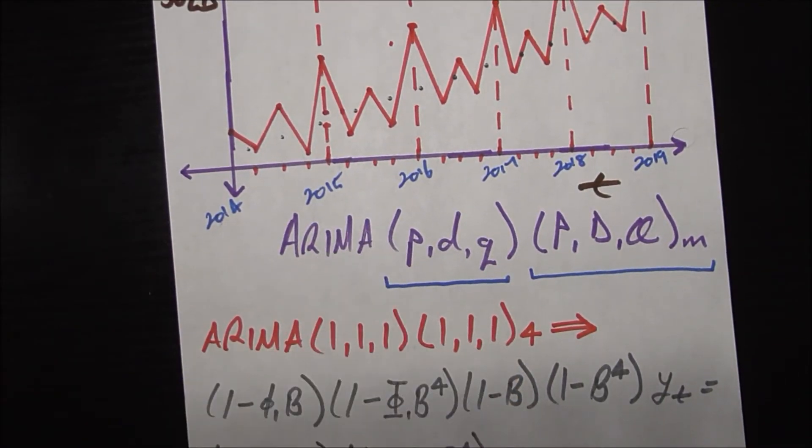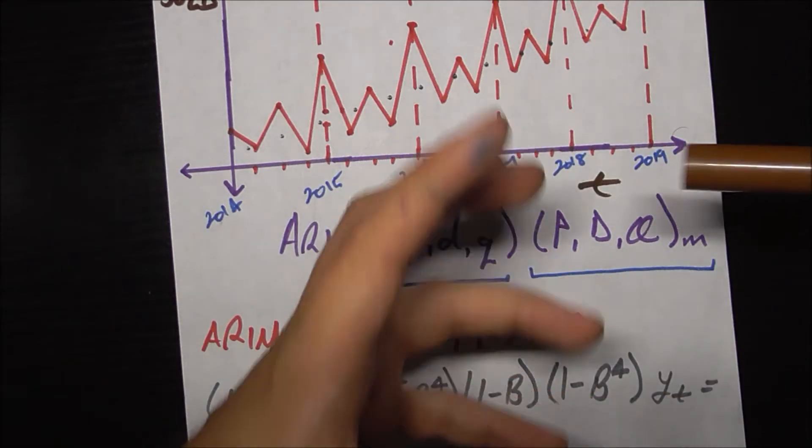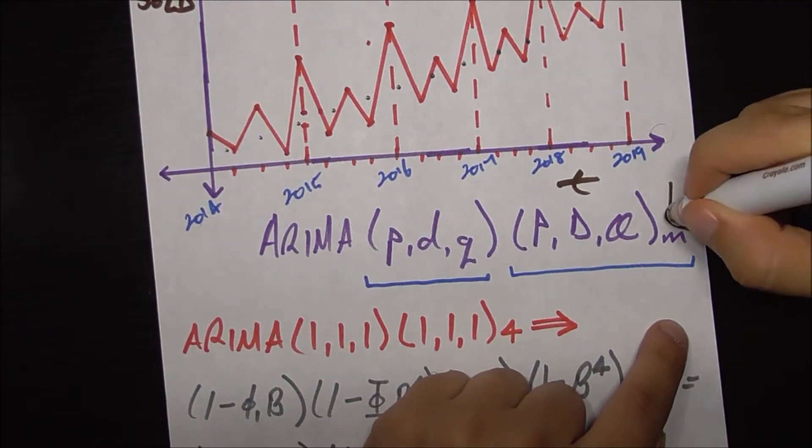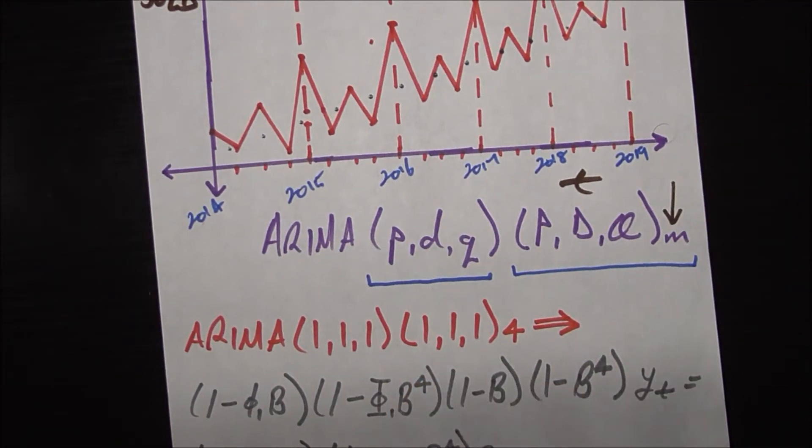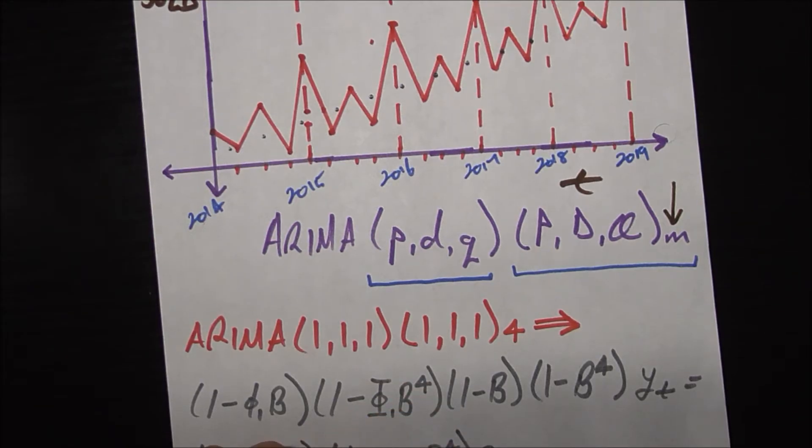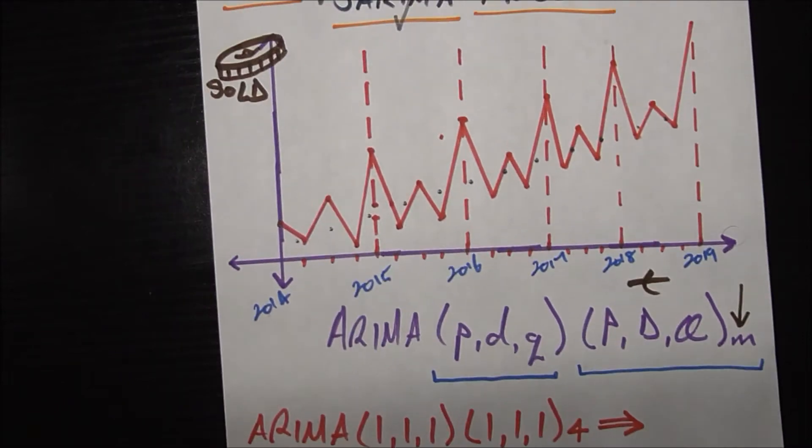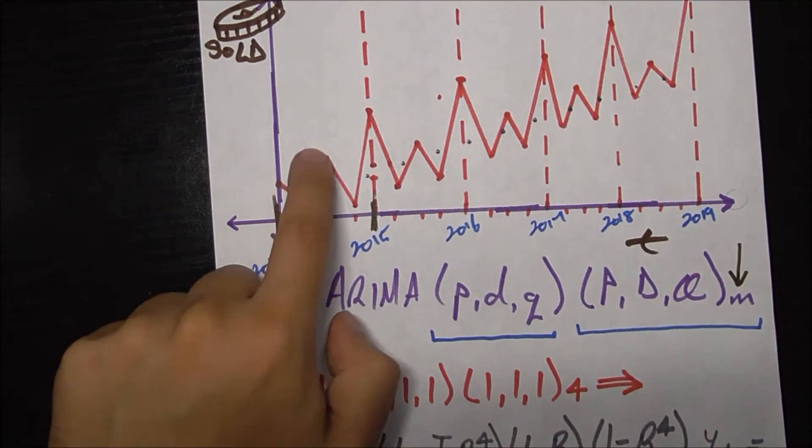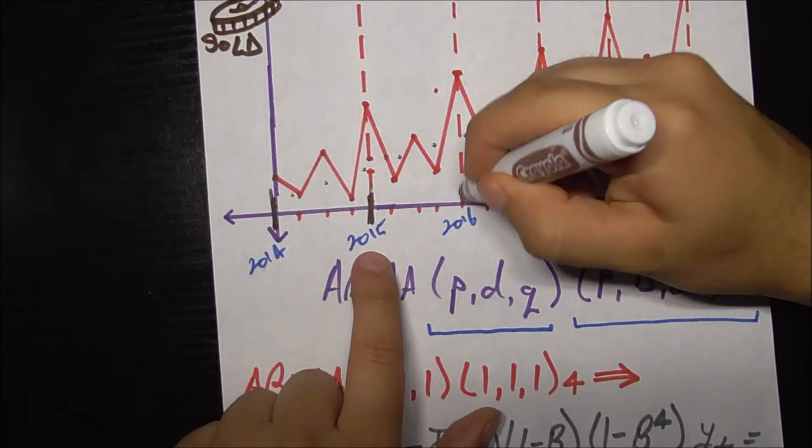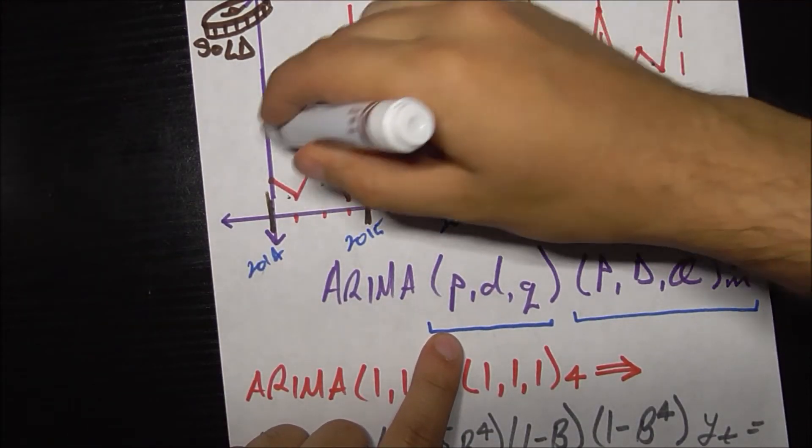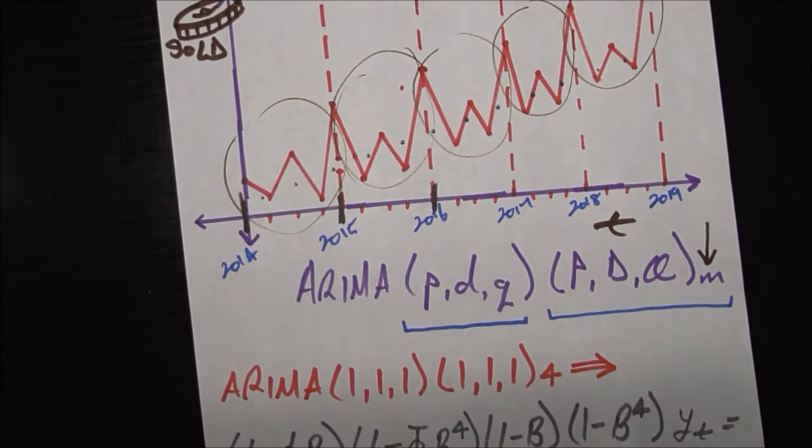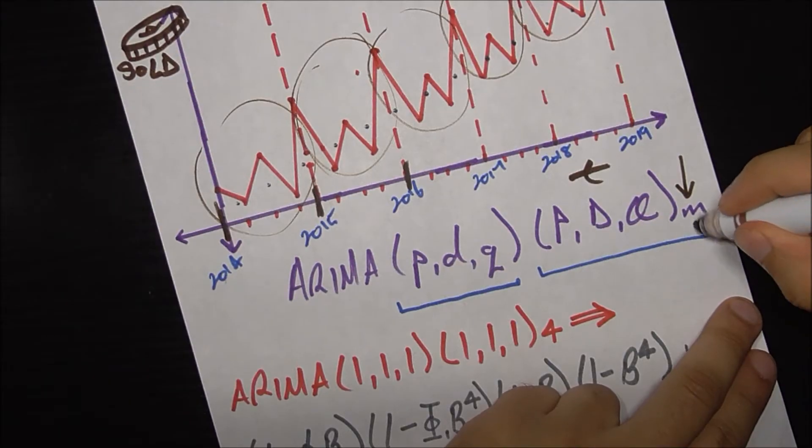The good thing about these seven parameters is that these next three are kind of just analogs of the first three, except in a seasonal context. Before talking about the uppercase P, uppercase D, uppercase Q, it makes more sense to talk about lowercase m. Lowercase m is the seasonal factor, which is the number of periods within a year it takes for the seasonality to repeat. In our case, that's four, because we see that within a year, we see one, two, three, four periods, and then after that the four periods form the next batch of seasonality. So m is four for us in this case.